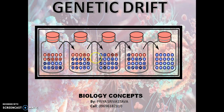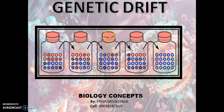You have to repeat this process a number of times, randomly reproducing each generation of marbles to form the next. This fluctuation is analogous to genetic drift. It is a change in the population's allele frequency resulting from a random variation in the distribution of alleles from one generation to the next.